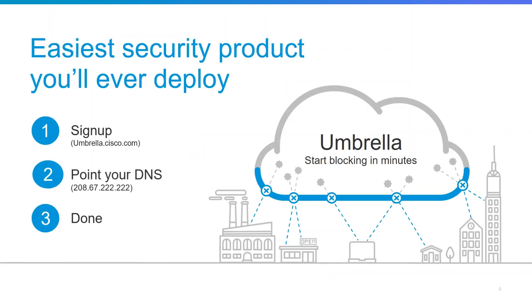In terms of deployment, just go to umbrella.cisco.com, register for a 14-day free trial, and redirect your DNS to 208.67.222.222 or 220. Go to the dashboard, add your network, and you have visibility of your network infrastructure. The great thing is you get a great amount of visibility as to what's happening on your infrastructure today — most users don't know what's happening. With IoT becoming more prevalent, what are those devices doing on your network, what resources they're accessing, and what's the likelihood they can be compromised? Something like Umbrella adds a simplistic layer to protect all your offerings.